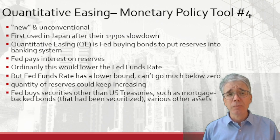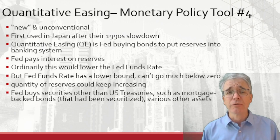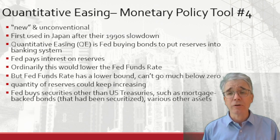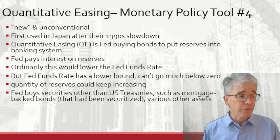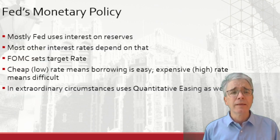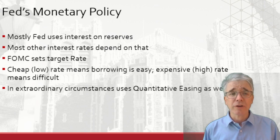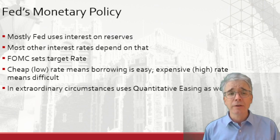The Fed also pays interest on reserves. Ordinarily, that might lower the Fed funds rate, but the Fed funds rate has a lower bound — it really cannot go much below zero. So quantitative easing is a way of increasing the quantity of reserves even as the price goes to zero. These days the Fed pays interest on reserves and can change that interest rate, and other interest rate changes depend on that — a cheap or low rate makes borrowing easy, while an expensive rate makes borrowing more difficult.